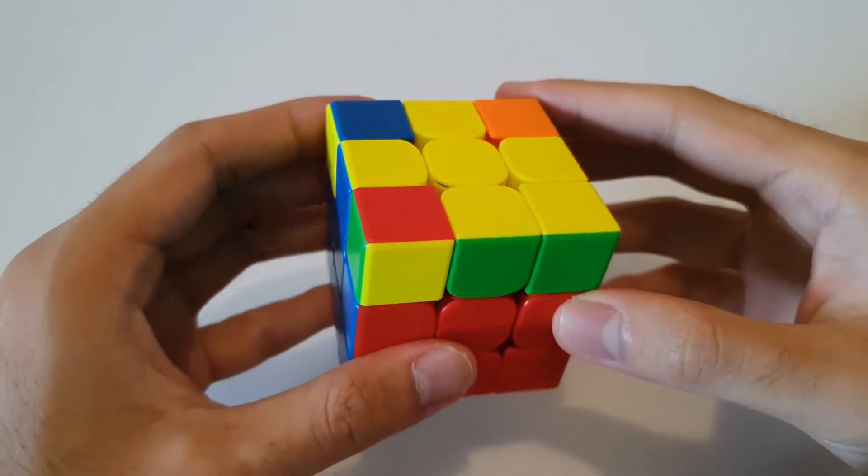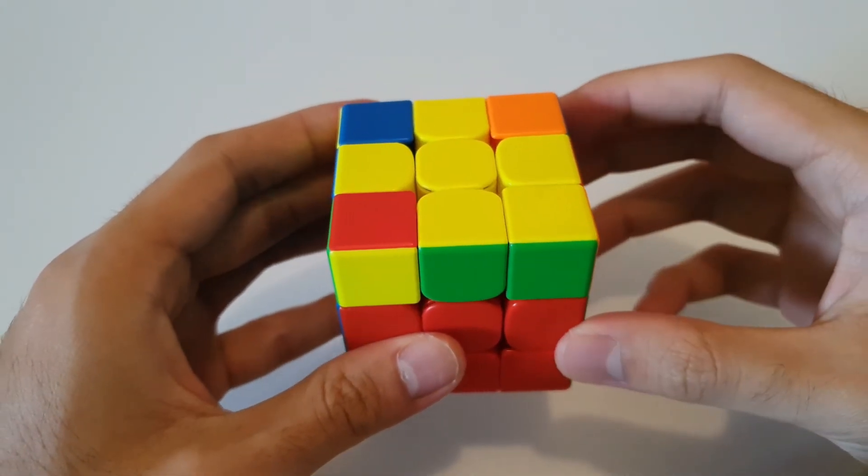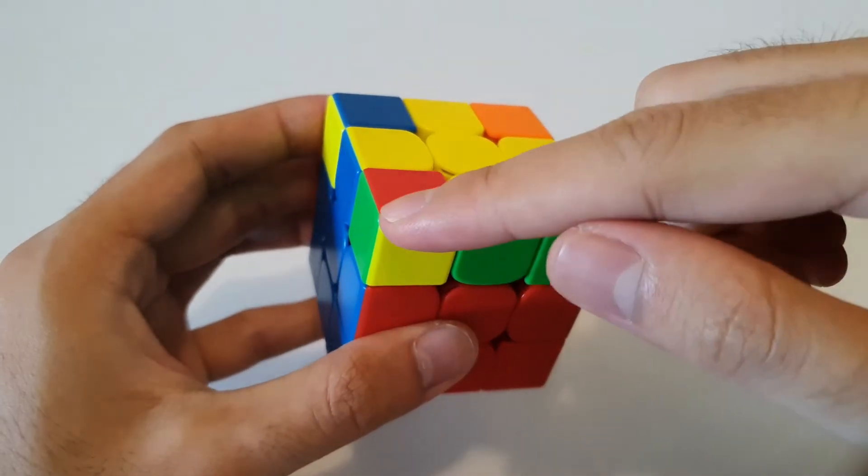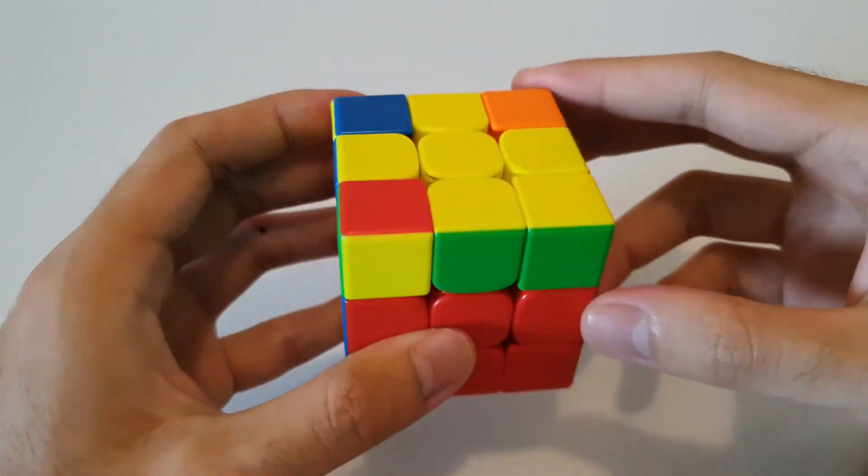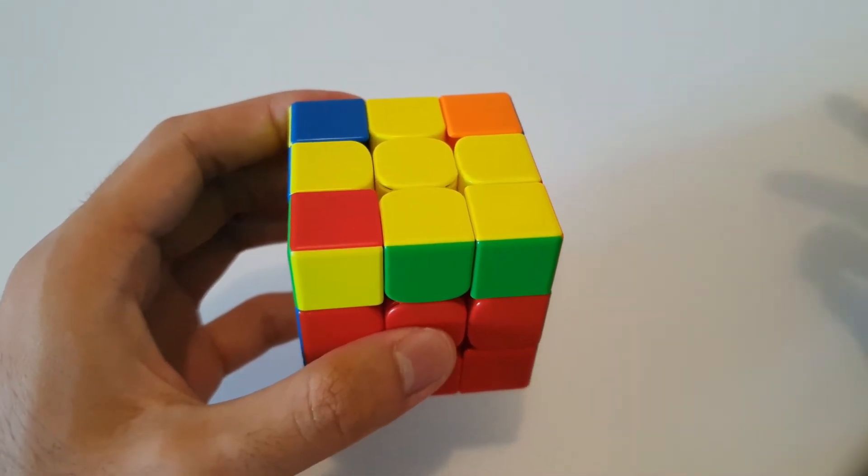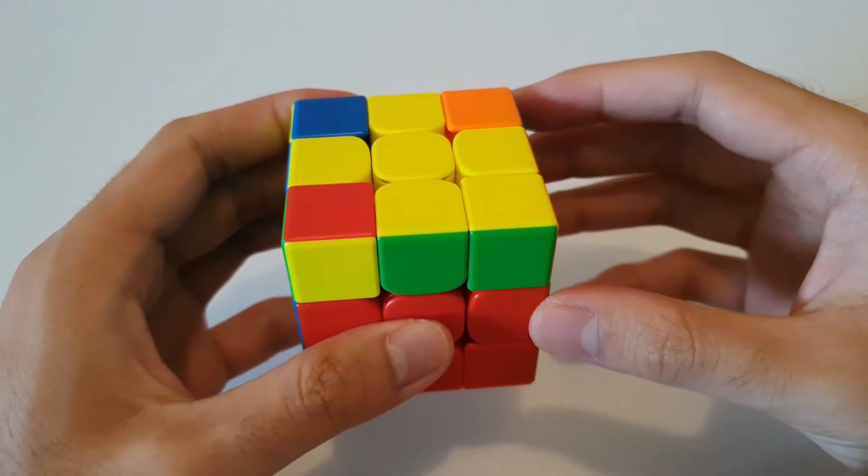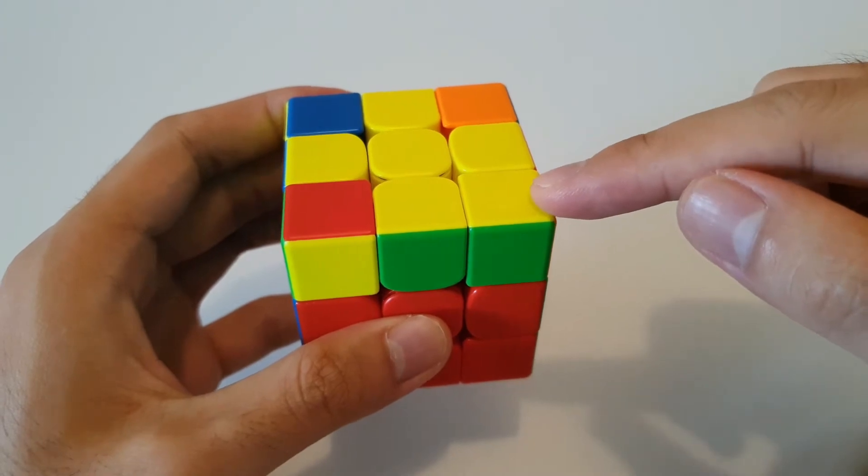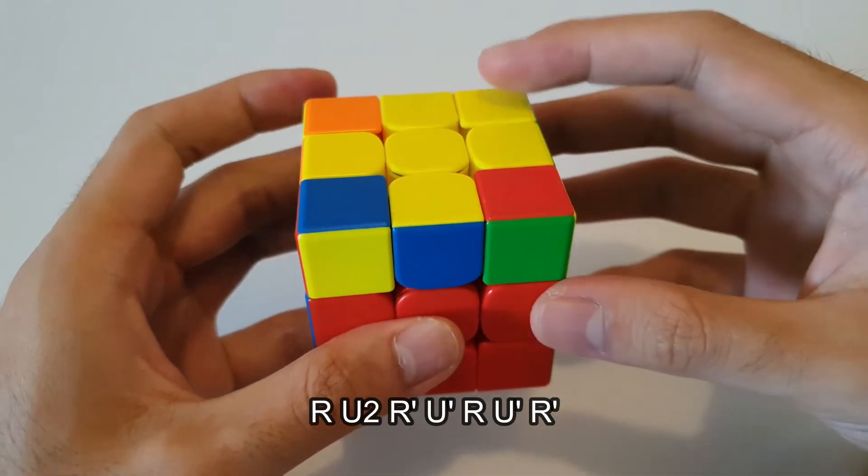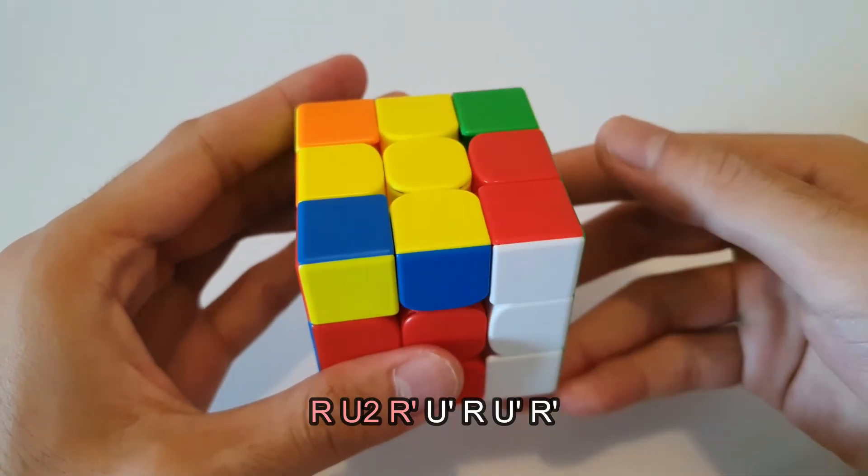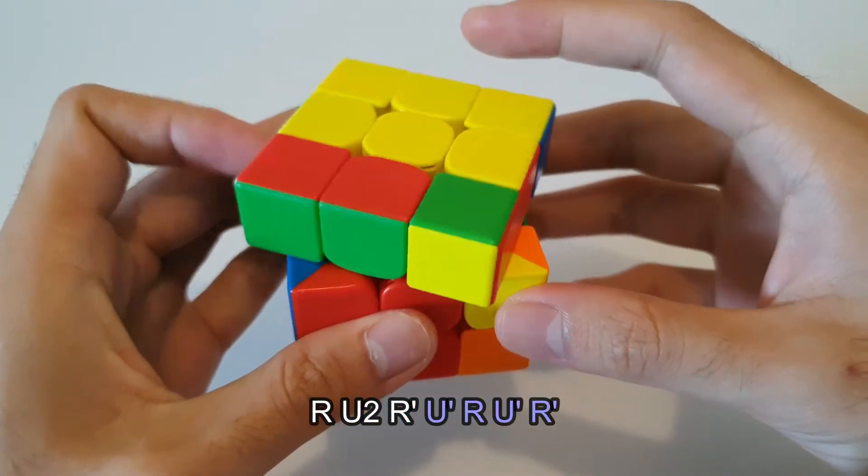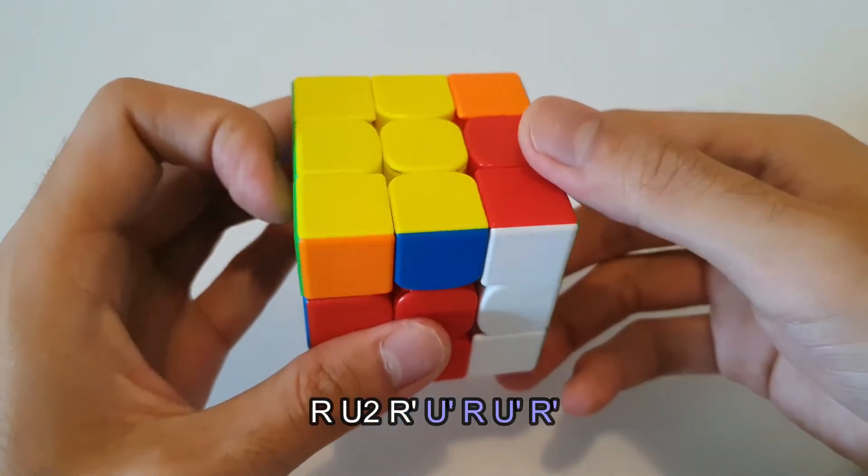So the next case you can get is very similar to the previous case, in that there's only one corner that's oriented, however the unoriented corners go in the other direction, so it's kind of the mirror of the previous case. For this case, it's known as the Anti-Sune, and I like to hold the oriented corner at the back right position here, and do this Anti-Sune algorithm. So it starts off by taking this F2L pair out with a U2, and then inserting the regular way.